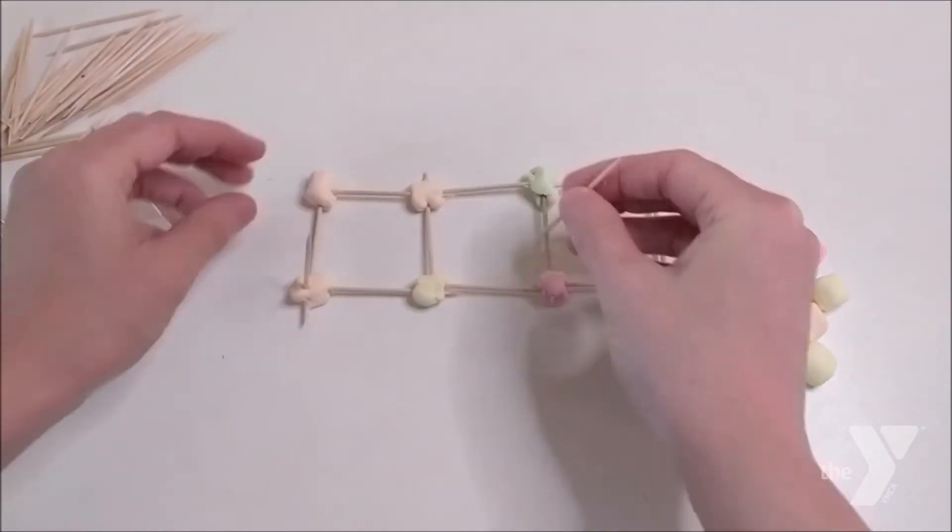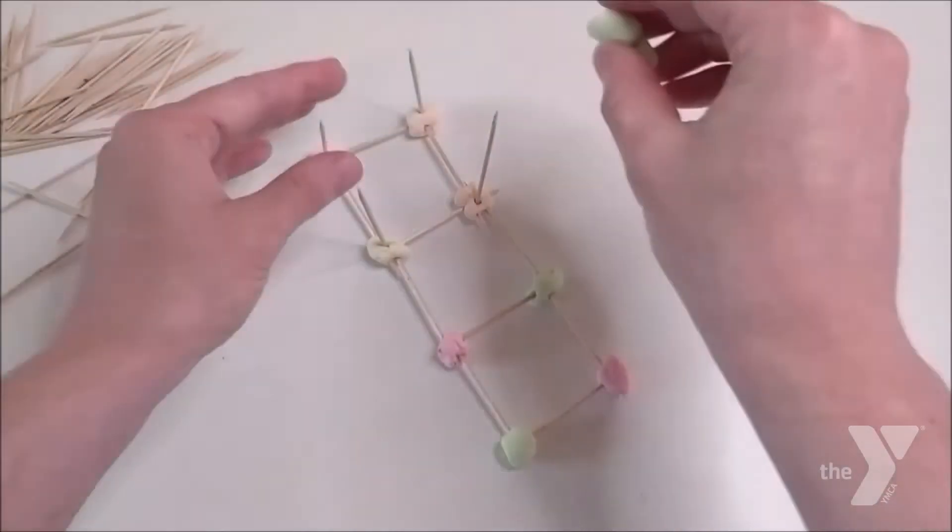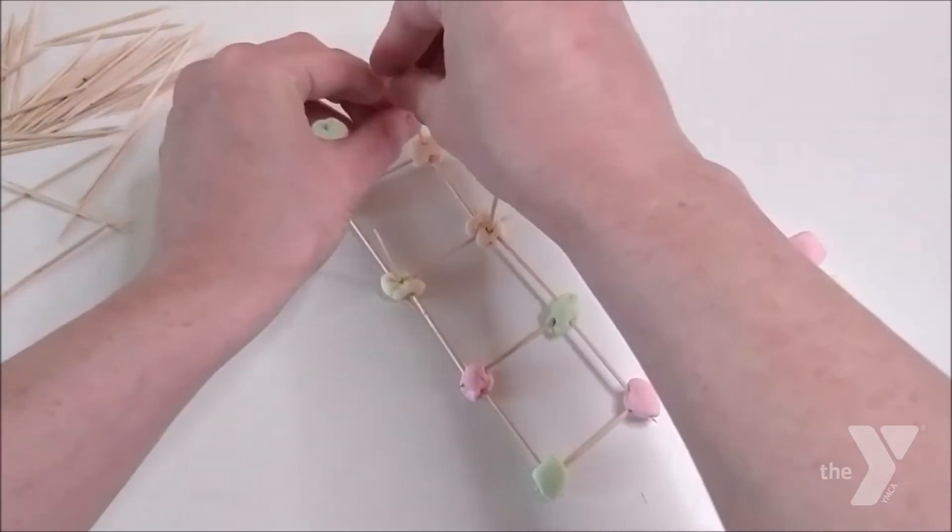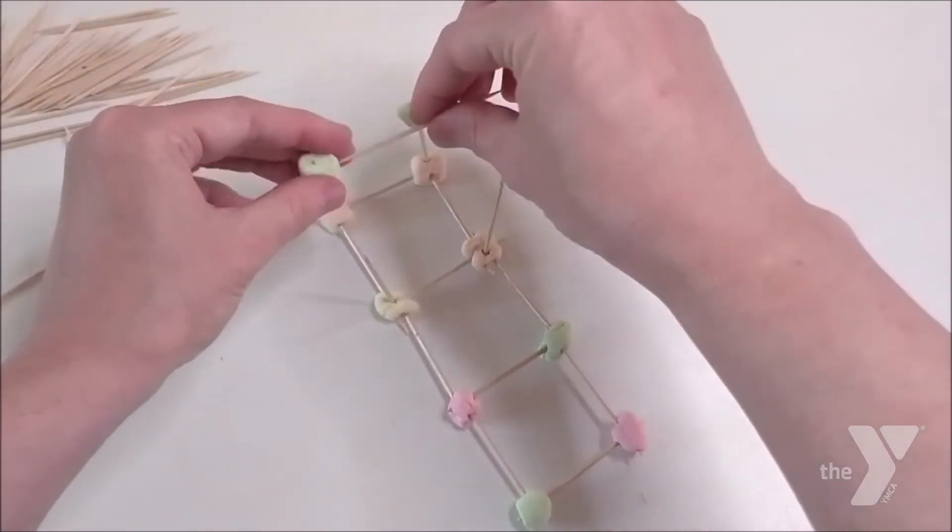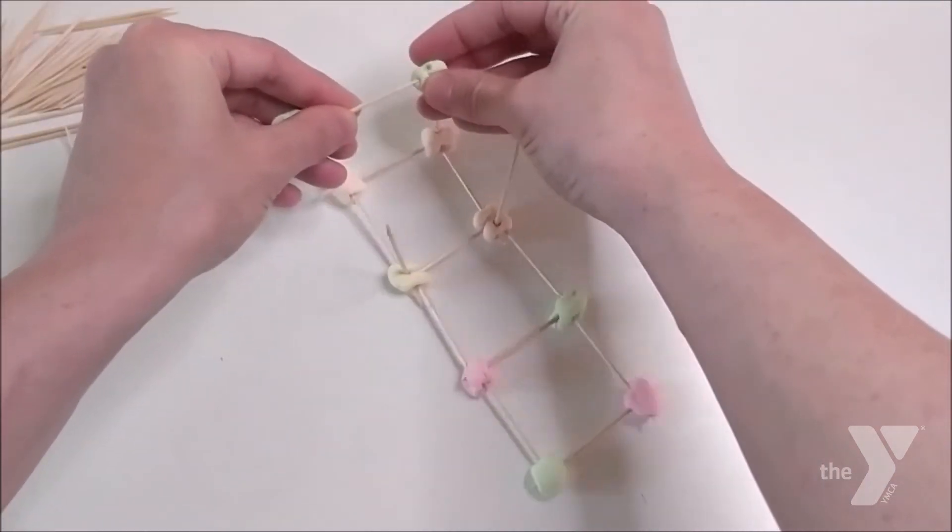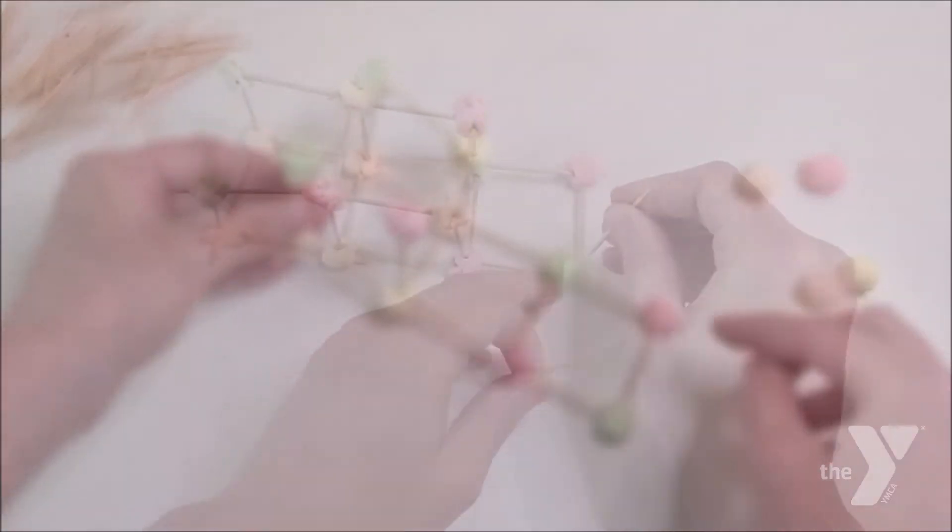Now we're going to make our squares into cubes, which a cube is just a 3D square. So take your toothpicks and stick them straight up in the air and stick your marshmallows on top and connect them to make cubes. Finish the entire bridge that way. Here, I'll show you that one more time. And when you finish, set it down gently because it's kind of fragile right now.